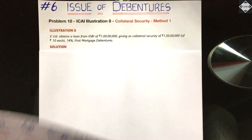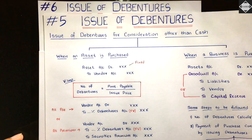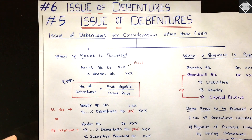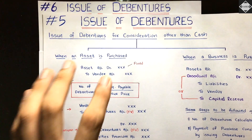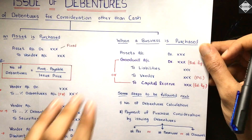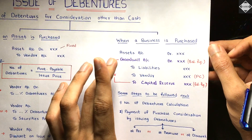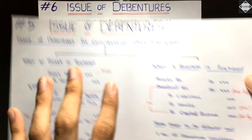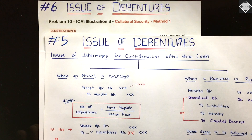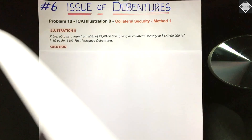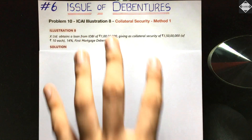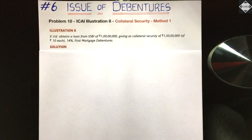In the fifth video we covered issue of debentures for consideration other than cash — when an asset is purchased and when a business is purchased. We solved two problems there as practical examples. Now let's get back to this video and start solving these three problems from the CA Foundation study material.